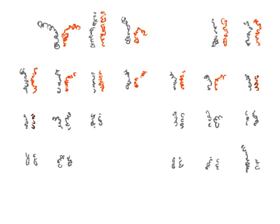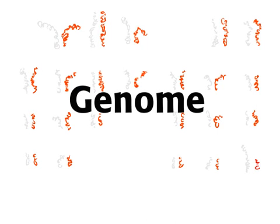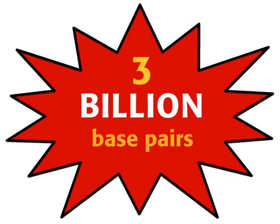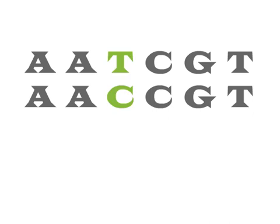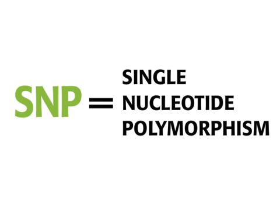An entire set of 23 human chromosomes is called a genome. The human genome is composed of 3 billion base pairs. Variation at a single base pair is called a SNP, or single nucleotide polymorphism.